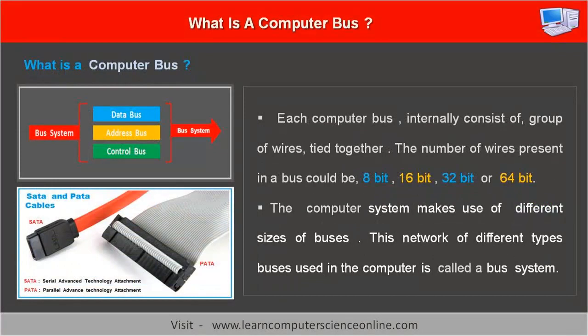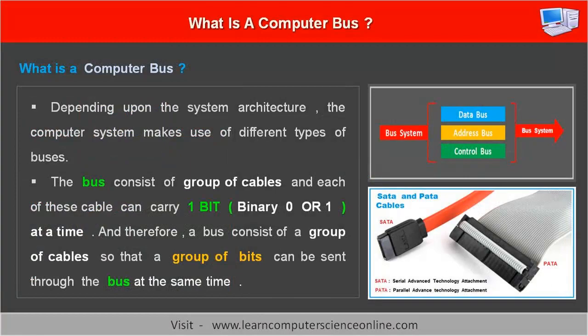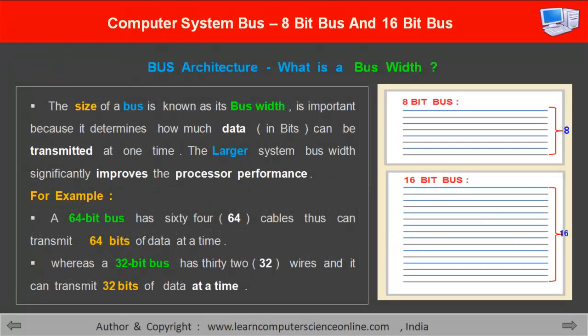Each computer bus internally might consist of a group of wires tied together. The number of wires present in a bus could be 8 wires, 16 wires, 32 wires, or 64 wires. The size of a bus is measured in terms of its bus width, which indicates the number of wires present in a bus. A computer bus with 64 wires is called a 64-bit bus. The computer system makes use of different sizes of buses depending upon the system architecture.